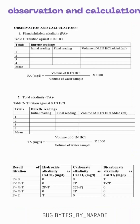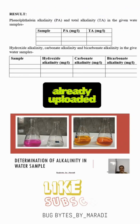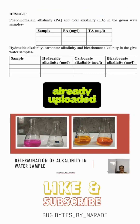As we titrated against sulfuric acid, it turned into a reddish-orange color. Here are the observation and calculation sections, and here is the results section. I have already uploaded a detailed video on how to calculate it, so please watch that video. Like and subscribe — thank you!